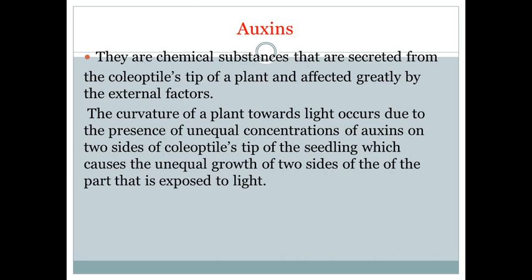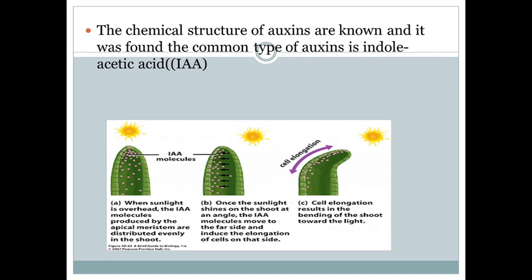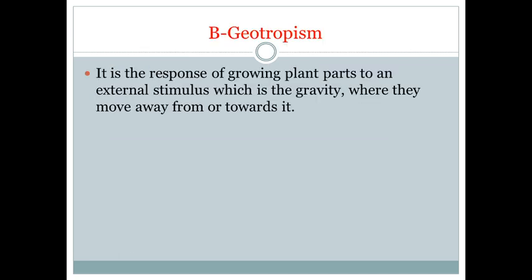The curvature of the plant towards light occurs due to the presence of unequal concentration of auxins on the sides of the coleoptile tip. The chemical structure of auxins is known, and it was found that the common type of auxin is indole acetic acid, IAA. These chemicals are distributed evenly in the shoot. When the plant is subjected to sunlight, the plant starts to move towards light, and the auxins move to the far side away from the light. This leads to elongation of cells on that side, and this cell elongation results in bending of the shoot towards the light.